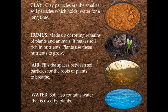Humus is made up of rotting remains of plants and animals. When plants and animals die, they are acted upon by bacteria and fungi which are present in the soil. When they act upon these dead plants and animals, they become rot and they add nutrients to the soil. So plants use these nutrients for their growth — just as we take food rich in nutrients, plants get their nutrients from humus.